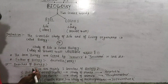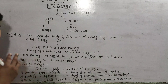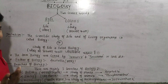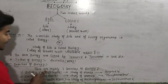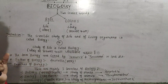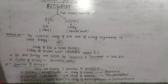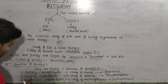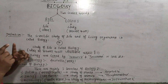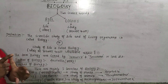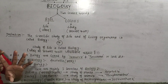अब हम branches of biology की बात करते हैं। Biology के बहुत सारे branches हैं, लेकिन यहाँ हम मुख्यतः तीन branches की चर्चा करेंगे। There are mainly three branches of biology: पहला है Botany, दूसरा Zoology, और तीसरा Microbiology।